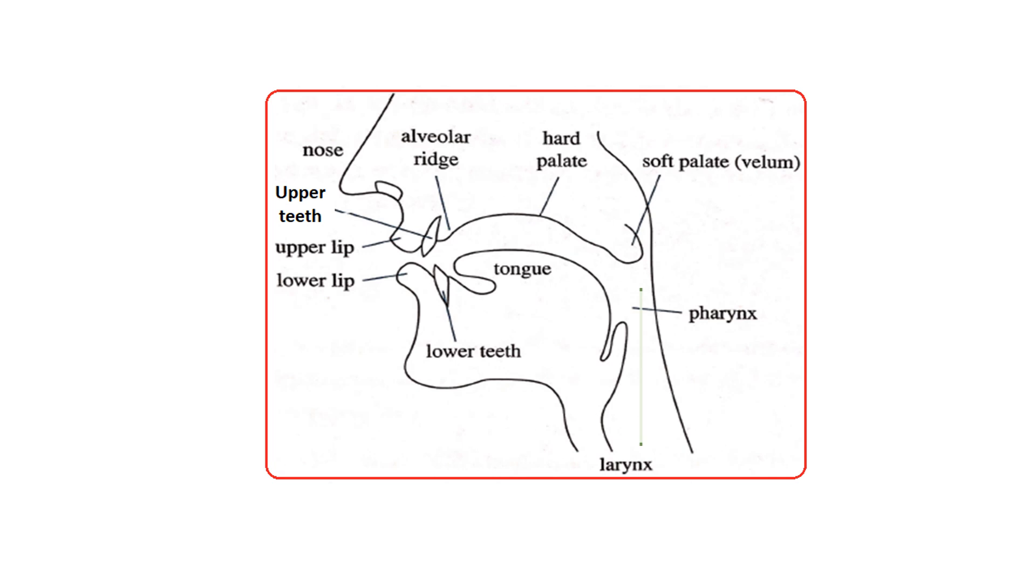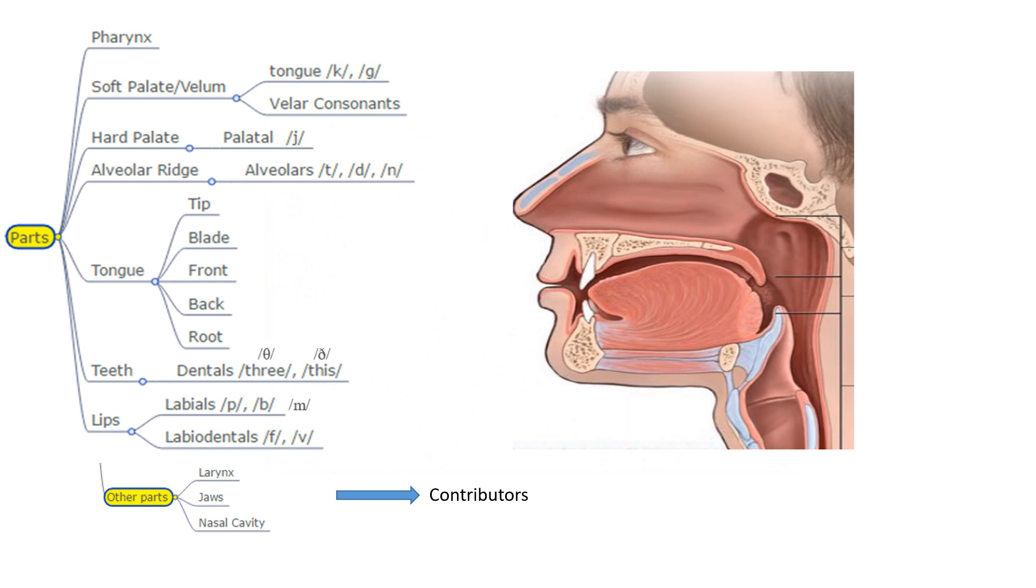This is where the pharynx is. Then the soft palate, the hard palate, the alveolar ridge, the tongue, the teeth and lips.